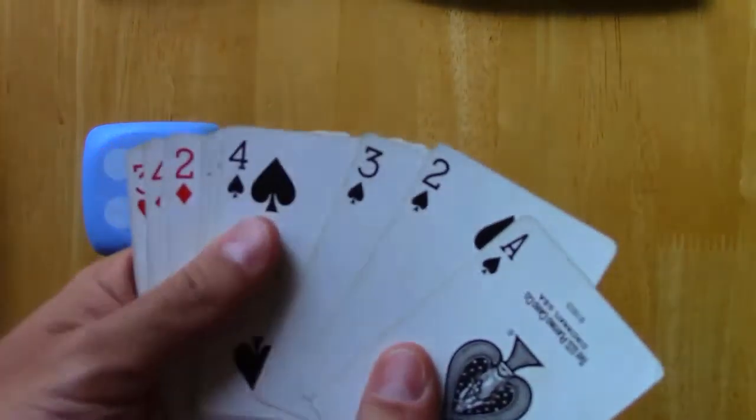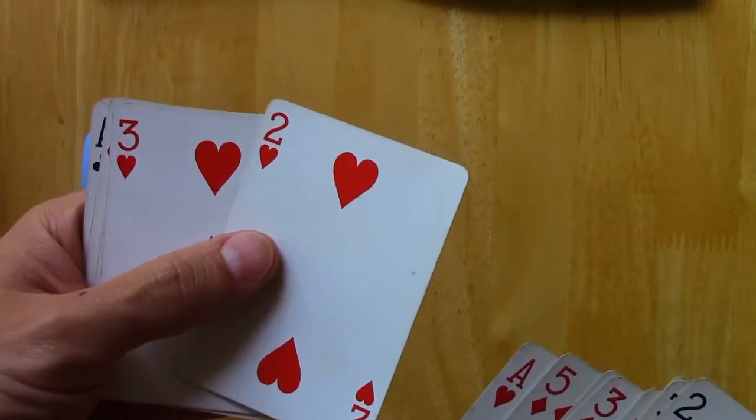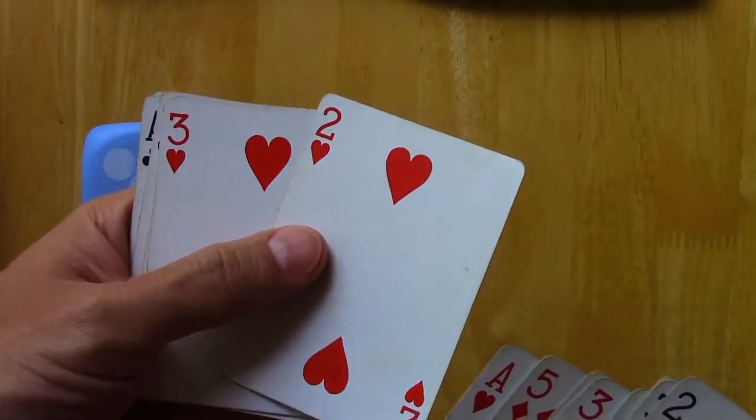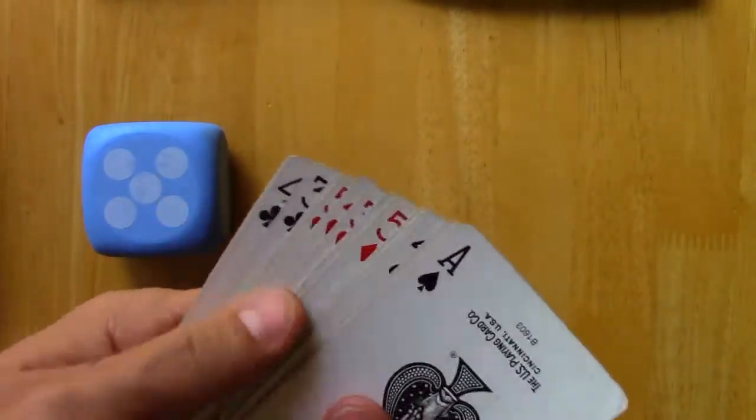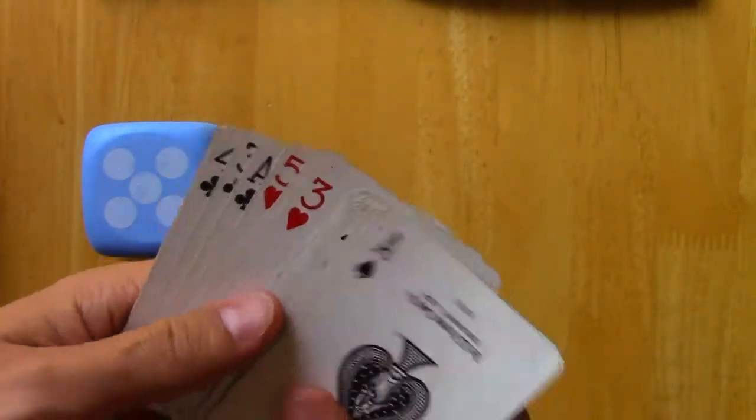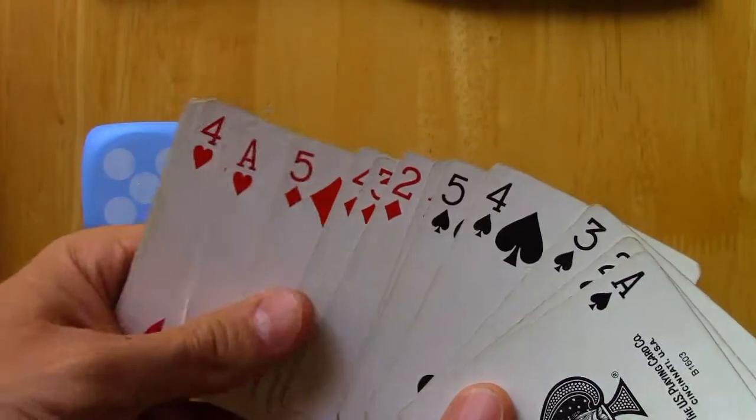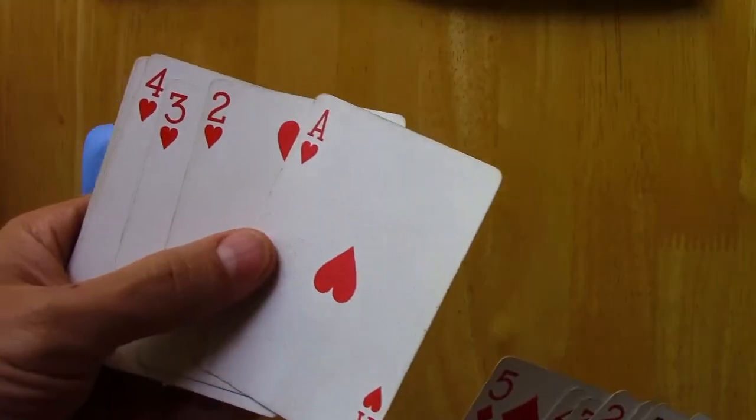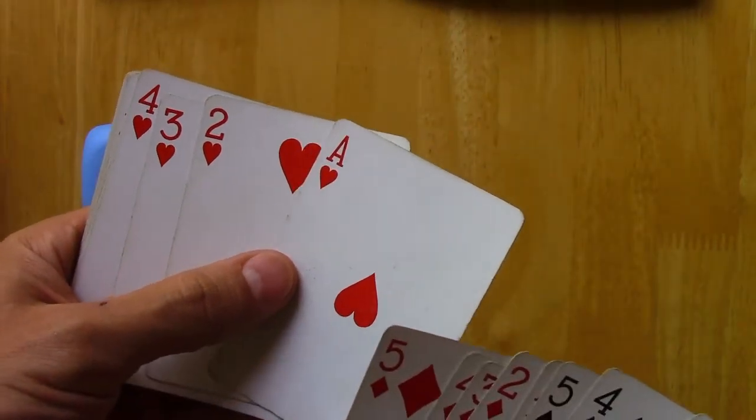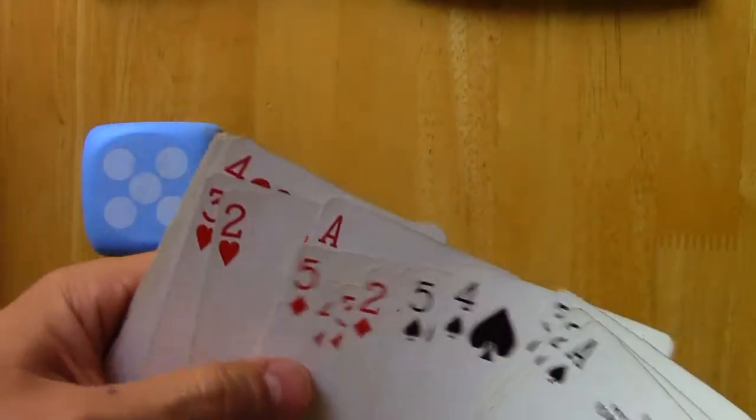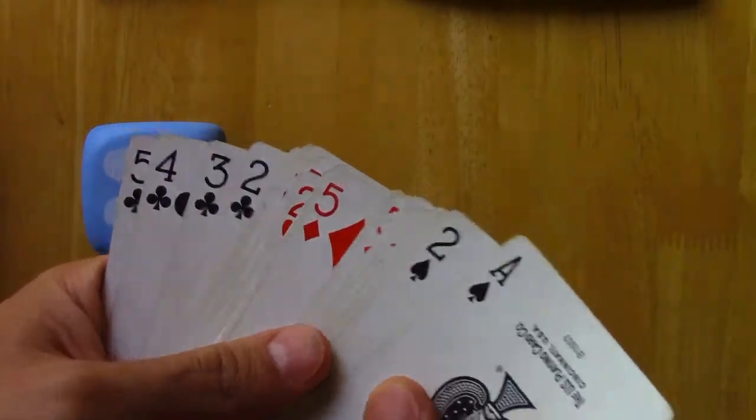You could also imagine instead of playing cards, these are individuals. Maybe the heart means they're unemployed. We want to know the percentage of unemployed individuals within a particular city. Or maybe the cards are different individuals in your company, and hearts means that individual worked more than 40 hours a week on average in the past year.